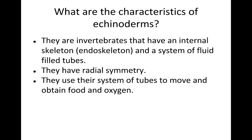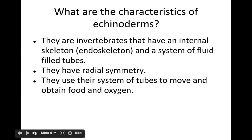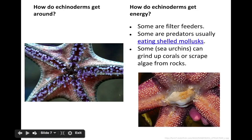They have what's called radial symmetry, meaning they can be cut in any direction and will have matching parts on either side — kind of like a bicycle wheel. They use their system of tubes to move around and to get food and oxygen. Echinoderms use things called tube feet to help them move, and all of them have these tubes on the underside of their body.